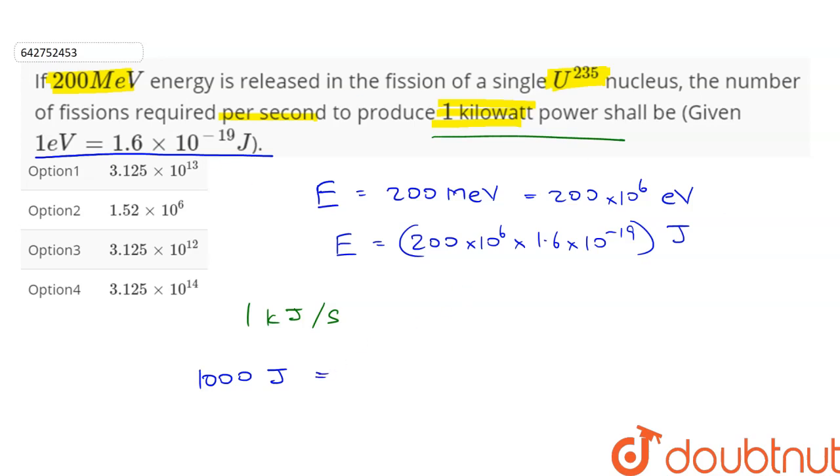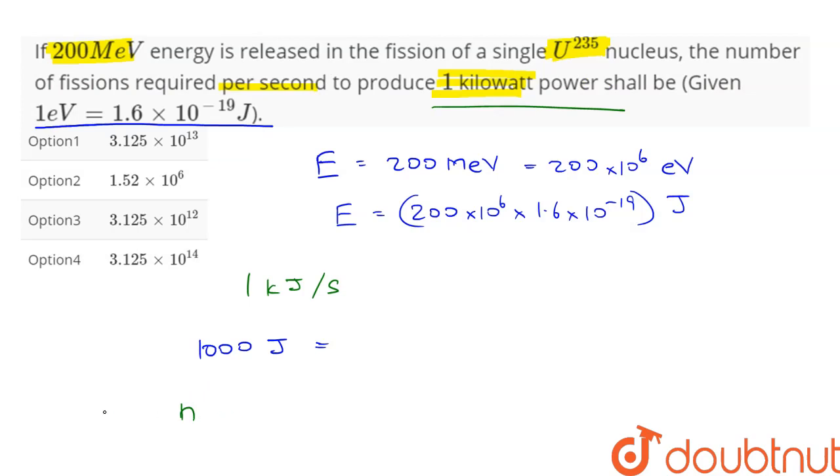If there are n number of fissions occurring per second, then the energy released due to n fissions is equal to n into energy produced in a single fission.